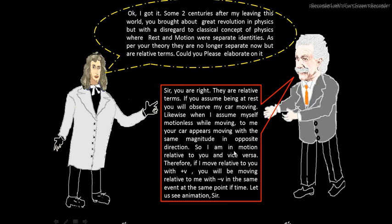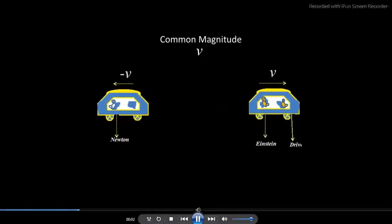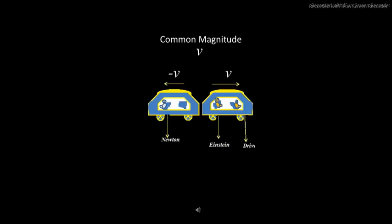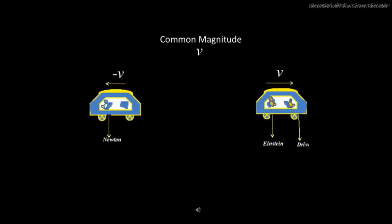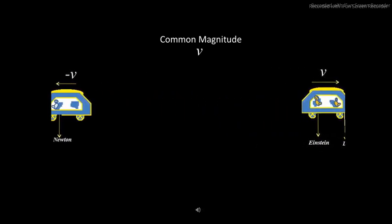Therefore, if I move relative to you with plus V, you will be moving relative to me with minus V — and the same event at the same point of time. Let us see the animation. There is no absolute rest or absolute motion. Relative to you I am in motion, and relative to me you are in motion — in the same event. The magnitude is common between us.